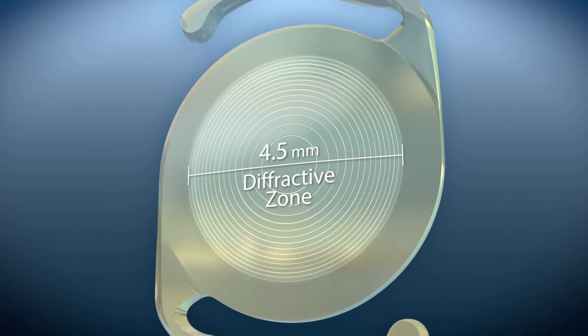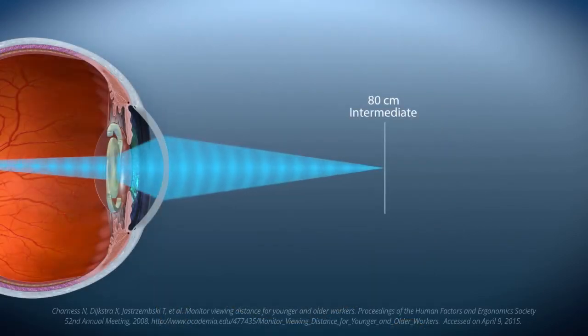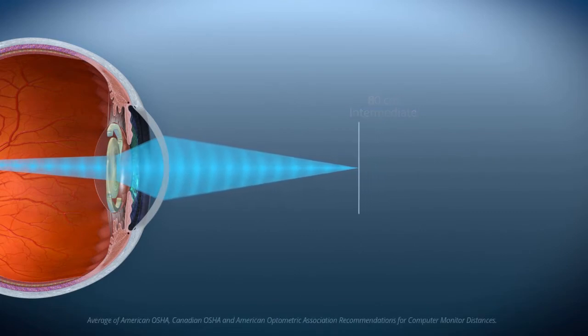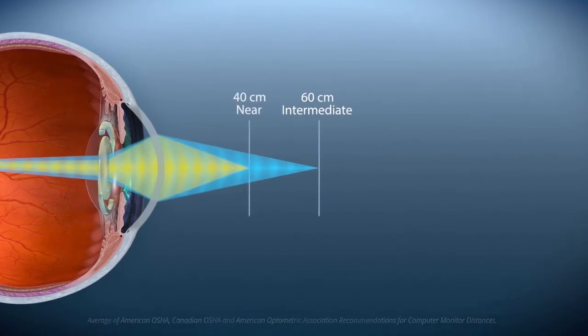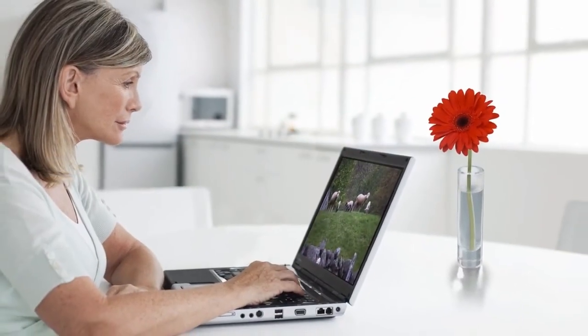And unlike other trifocals with an 80cm intermediate focal length, the Acrysoft IQ Panoptix IOL provides a working distance of 60cm. This is a more comfortable distance for many common activities, such as computer work.